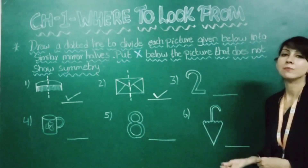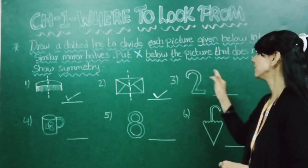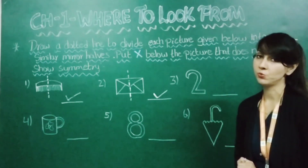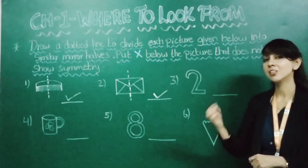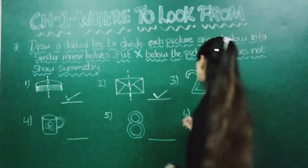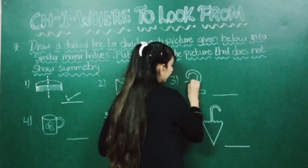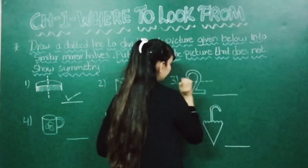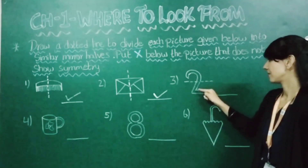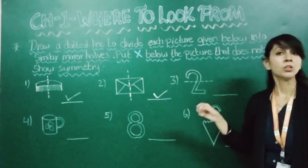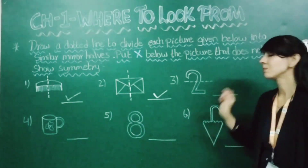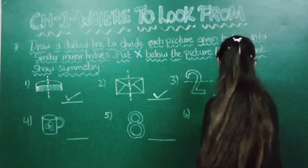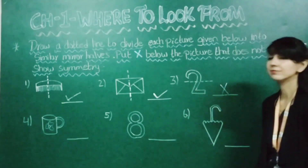Next picture is a number — this is number 2. Let's draw a dotted line. Do you get both sides the same? No. So here we will place a cross — it does not show symmetry.